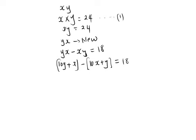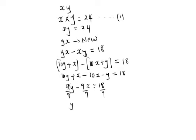If we open the brackets, we will have 10y plus x minus 10x minus y equal to 18. 10y minus y gives us 9y. X minus 10x gives us negative 9x which is equal to 18. We simplify this by dividing by 9 because it is a common divisor. And this gives us y minus x equals 2. This forms our second equation.